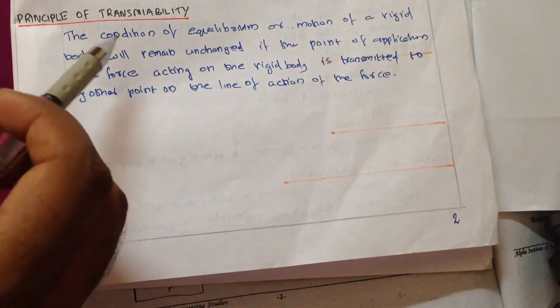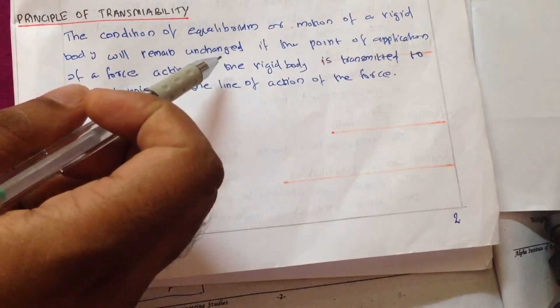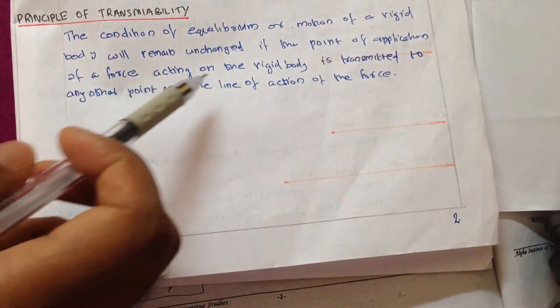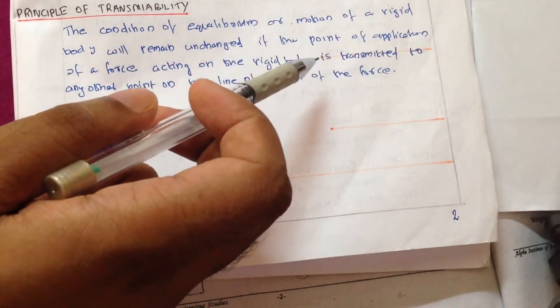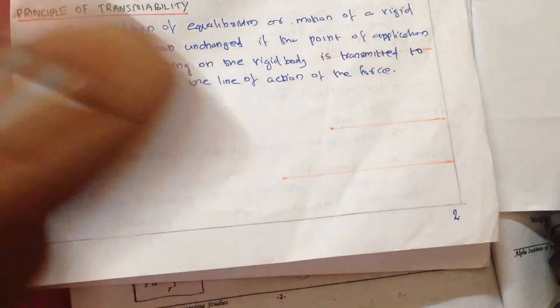It states, the condition of equilibrium or motion of a rigid body will remain unchanged if the point of application of a force acting on the rigid body is transmitted to another point on the line of action of the force.